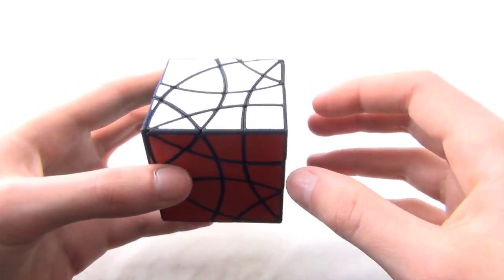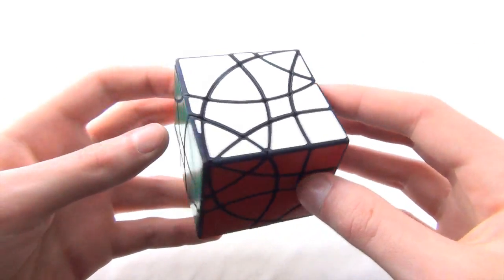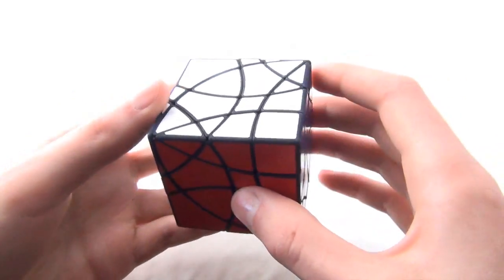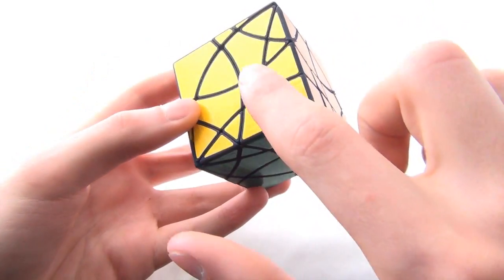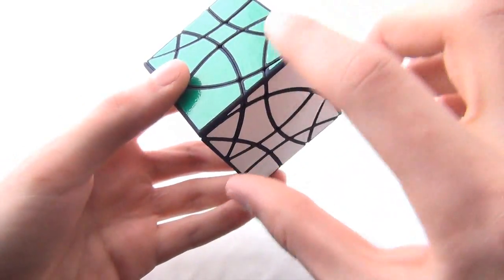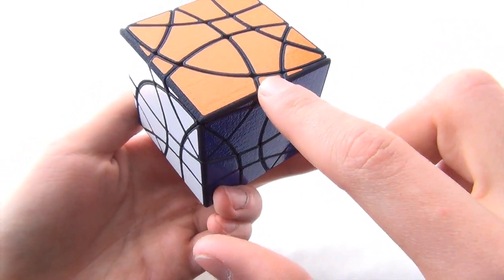So in this puzzle, there are 12 turnable axes. However, 6 of these axes are located on the faces of the cube, and the other 6 are located on edges of the cube.